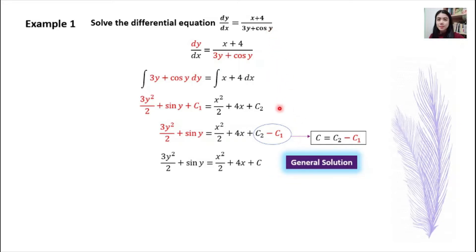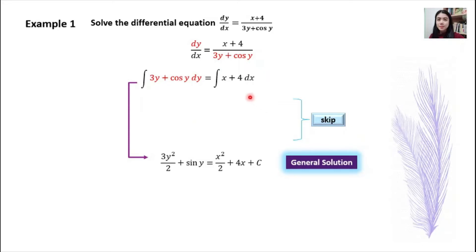Usually we skip the steps involving c1 and c2. What you have to do is just write the integration, and from the integral equation directly, write a single plus c on the right-hand side, skipping the steps that involve c1 and c2. So this is the answer for the general solution.